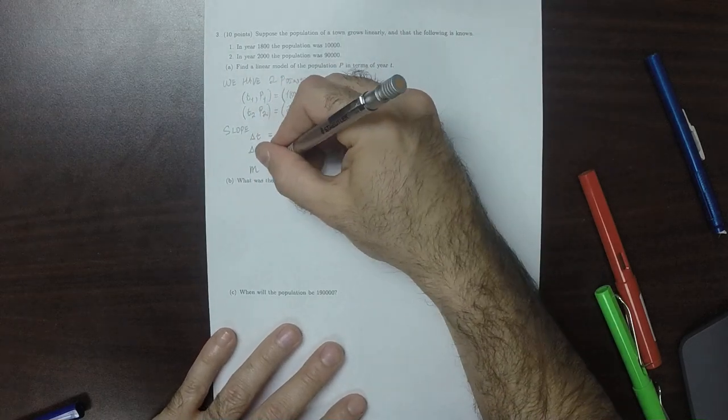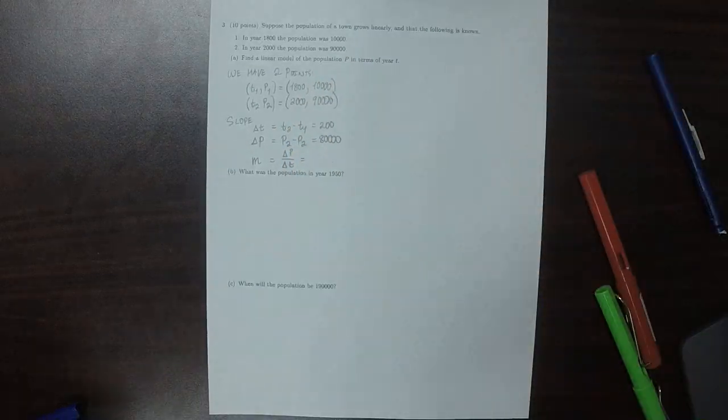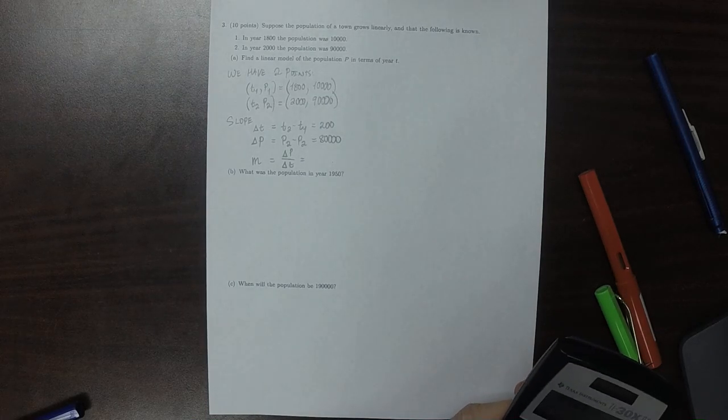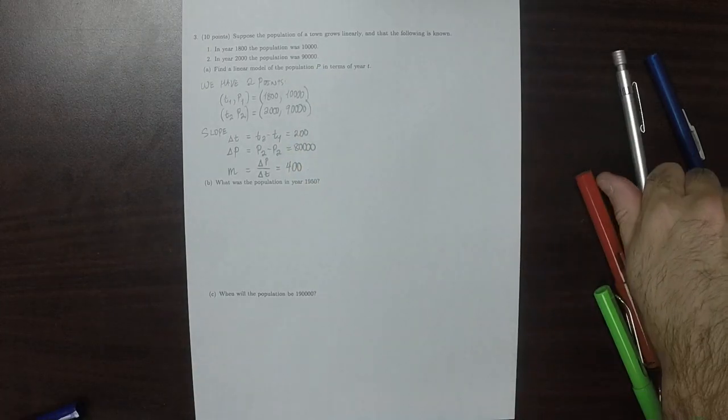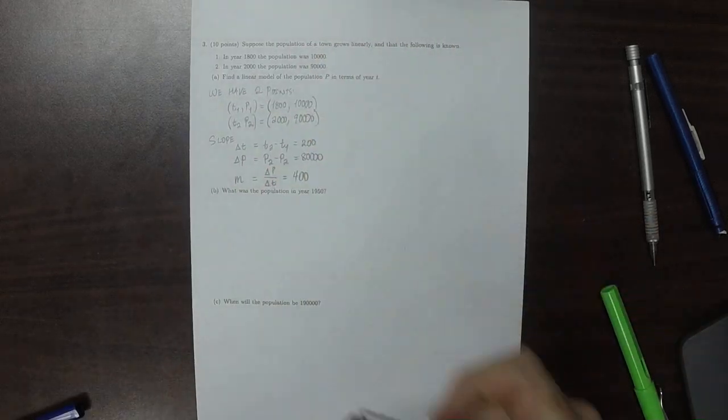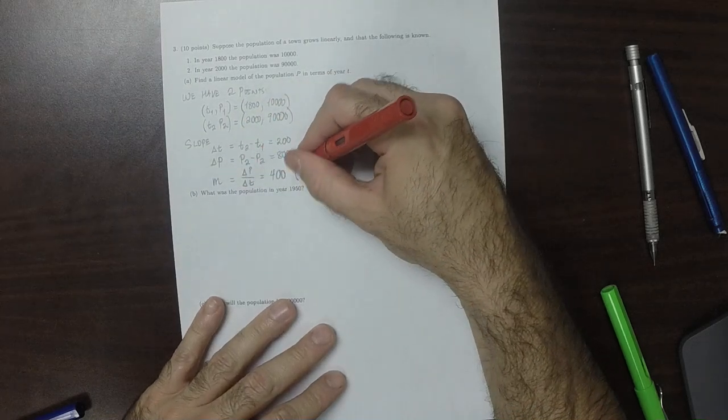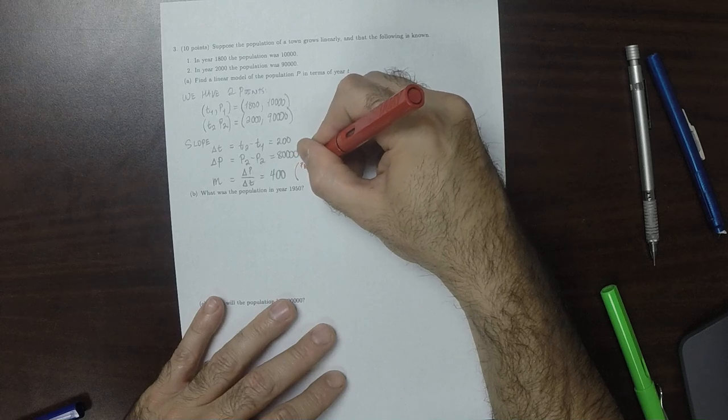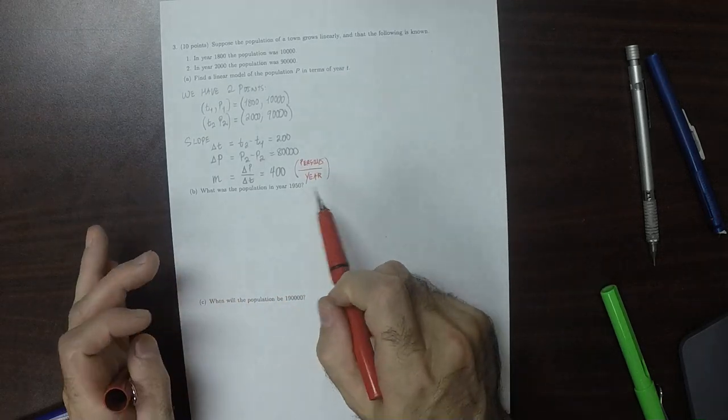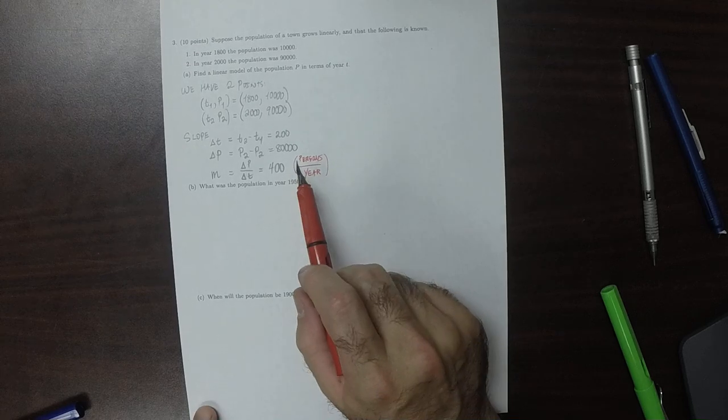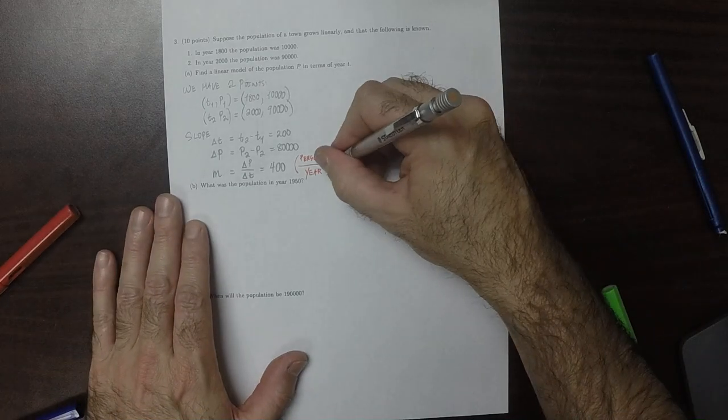And M is the ratio, delta P over delta T, which will be 80,000 over 200, which is 400. So to make sure that the rest of these things make sense, the units in this should be persons per year. So let's think about that. Does that make sense? That would mean that there's 400 new people every year over the course of 200 years. So yeah, that makes sense. That's the slope.